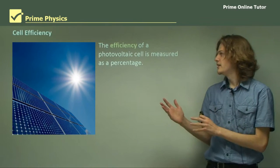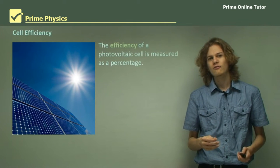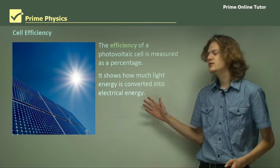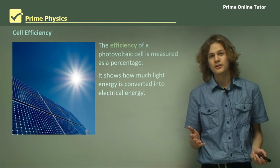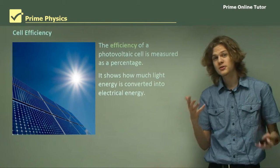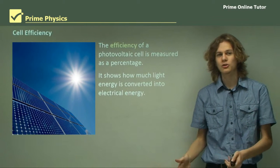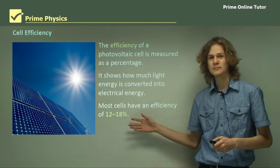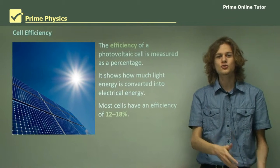The efficiency of a photovoltaic cell is measured as a percentage. In this instance, we have a particular definition of the word efficiency — it shows how much light energy is converted into electrical energy. For example, a 100% efficient cell converts all light energy into electrical energy. A 50% efficient cell turns exactly half of the light energy into electrical energy. Most cells have an efficiency of about 12% to 18%, meaning between 12% and 18% of the incoming light energy is turned into electrical energy.